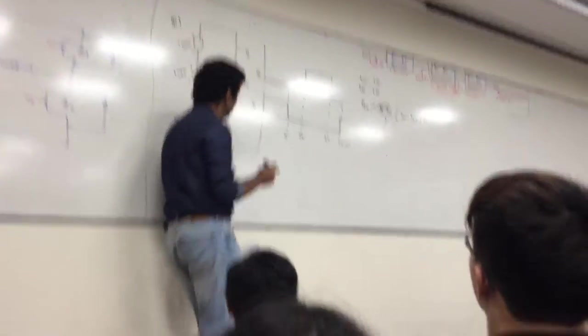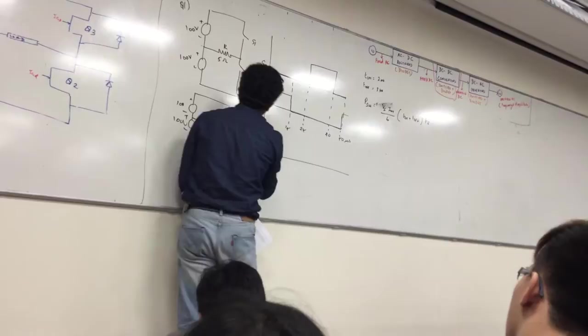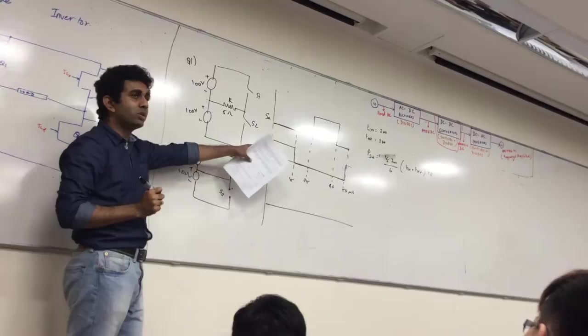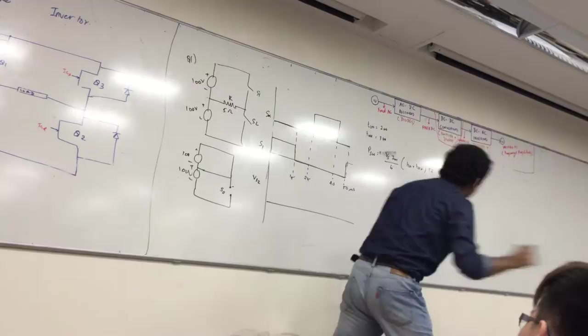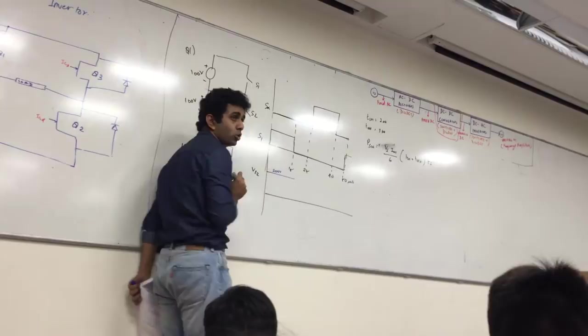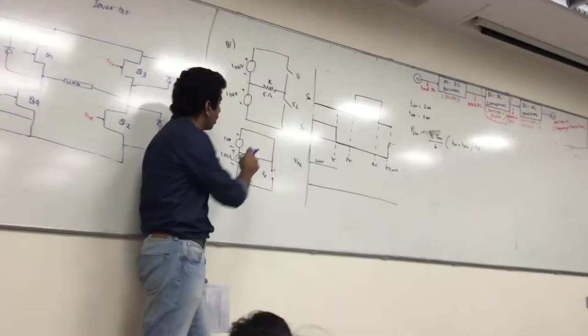Let me plot out the voltage waveform for switch two. When switch one is on, I'm going to have 200 volts. When switch one is off, then what happens?